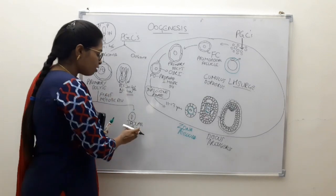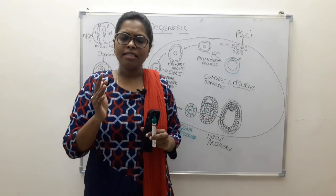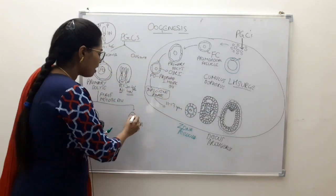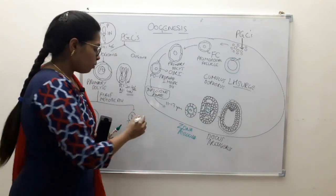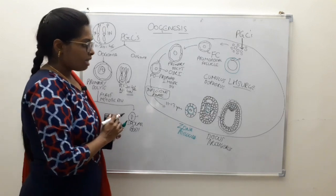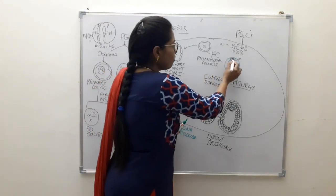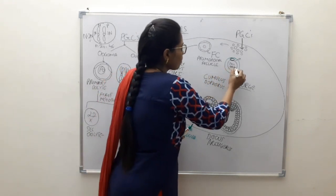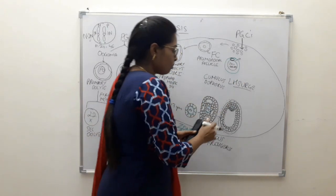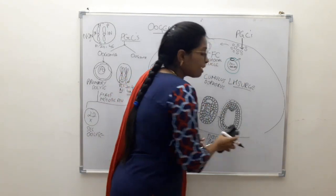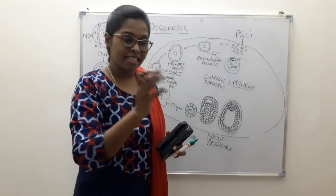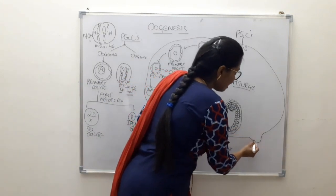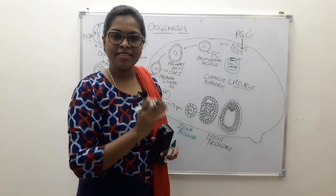The first polar body receives only little cytoplasm, while most of the cytoplasm is retained by the secondary oocyte. The first polar body is accumulated within the perivitelline space. The follicle then prepares to release the secondary oocyte, bulging at the point where it will burst.